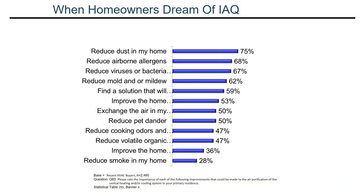When surveyed on what they wish they had for indoor air quality, most people want to reduce dust. Two-thirds want to get rid of bacteria and viruses. They want to deal with allergens, mold, and pet dander. There are lots of people allergic to cats who own cats anyway. They want to solve these problems — they just don't associate you with being the solution.